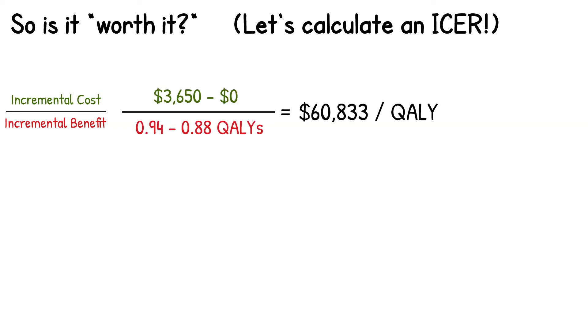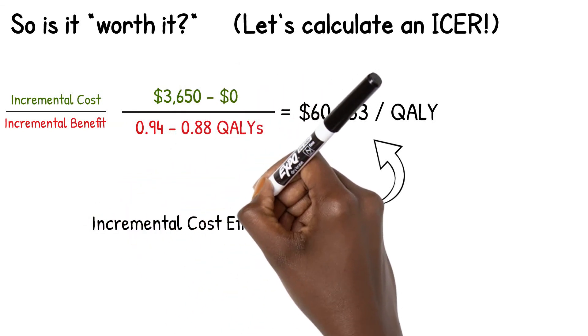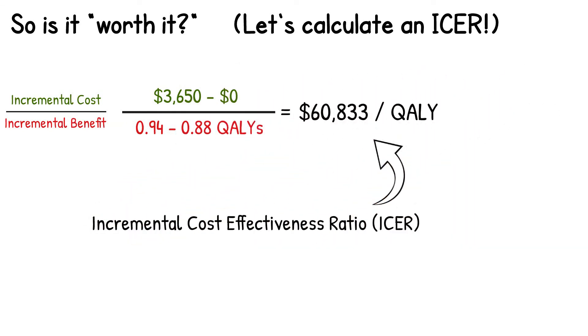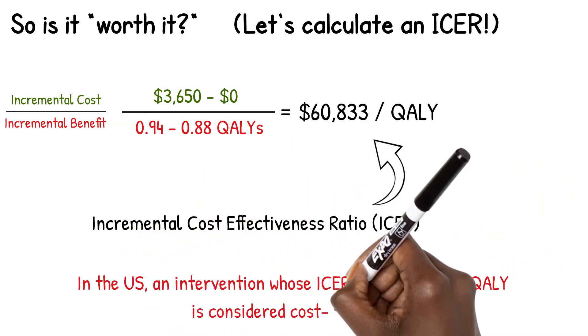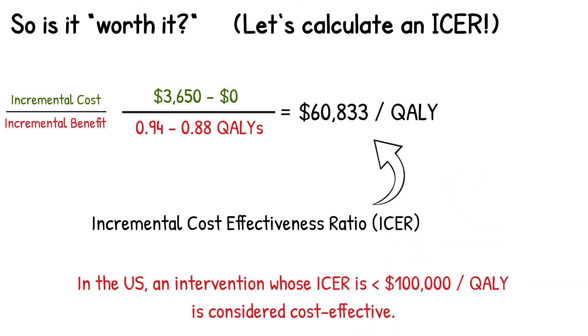The ICER is used in a number of fields when evaluating new drugs, devices, and other new technology to determine whether it is considered cost effective. And though the exact threshold to decide if something is cost effective varies by country, by benchmark, and by intervention, a commonly used threshold is less than $100,000 per QALY. Meaning that if the incremental cost spent is less than $100,000 per QALY gained, then the intervention is considered cost effective.